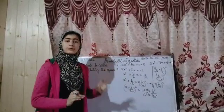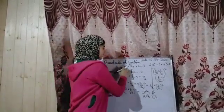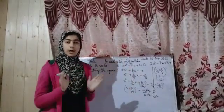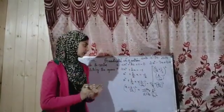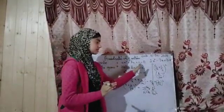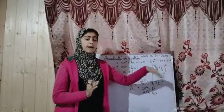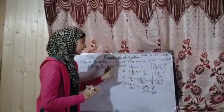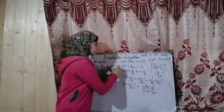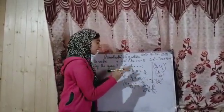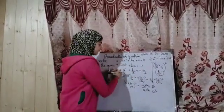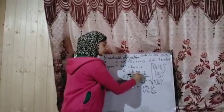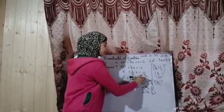First we will derive the formula. If ax² + bx + c = 0 is the general formula of a quadratic equation, we will transpose c to the RHS so it becomes minus c. Then we will divide by the coefficient of x² on both sides. After dividing, it becomes x² + (b/a)x = -c/a.